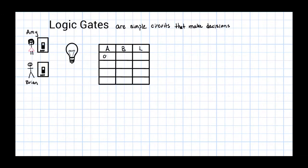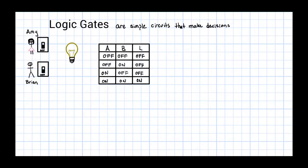Let's construct a table showing all the possible input switch combinations and their associated light bulb outputs. If both Amy and Brian have their switches off, the light bulb is off. If Amy has her switch off but Brian has his switch on, the light bulb will still be off. Likewise, if Amy has her switch on but Brian has his off, then the light bulb will be off. However, if both Amy and Brian have their switches on, the light bulb turns on.